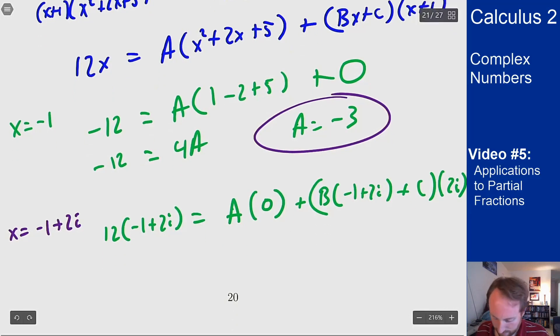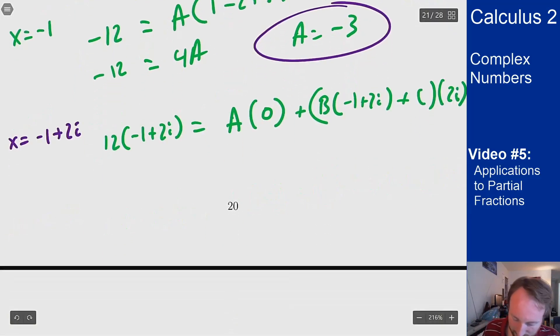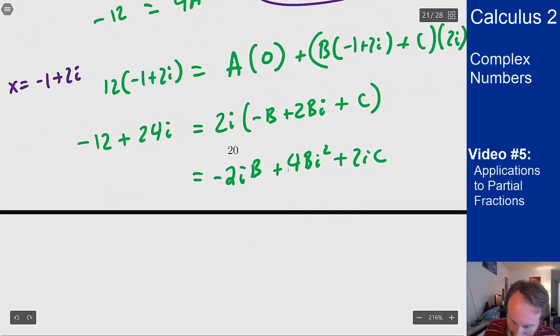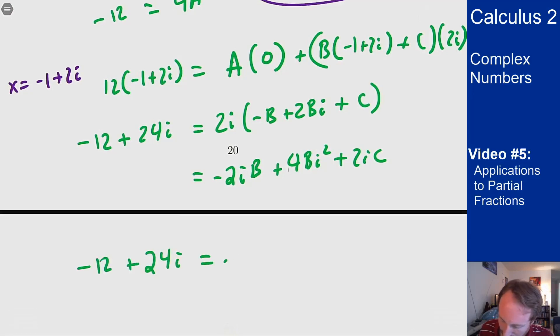Giving me -12+24i on left equals 2i times -B+2Bi+C or -2iB+4B+2iC and then since i² is -1 I get -12+24i equals -4B because that's the i² term plus i times (2C-2B).